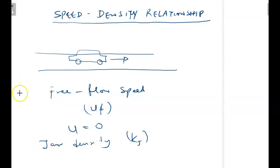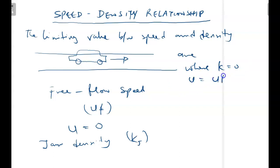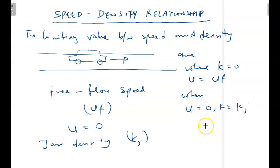The limiting values of the relationship between speed and density are: when k equals zero, u equals u_f (free flow speed); and when u equals zero, k equals k_j (jam density). As density increases, speed reduces. At the point where jam density k_j is reached, speed is zero.